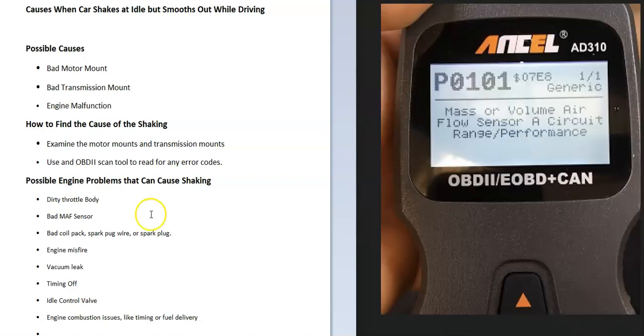For example, a bad MAF sensor will give you a P0101 or P0102 code. The same is true for bad coil packs or engine misfires—you'll get a code for it. If possible, definitely scan the onboard computer.